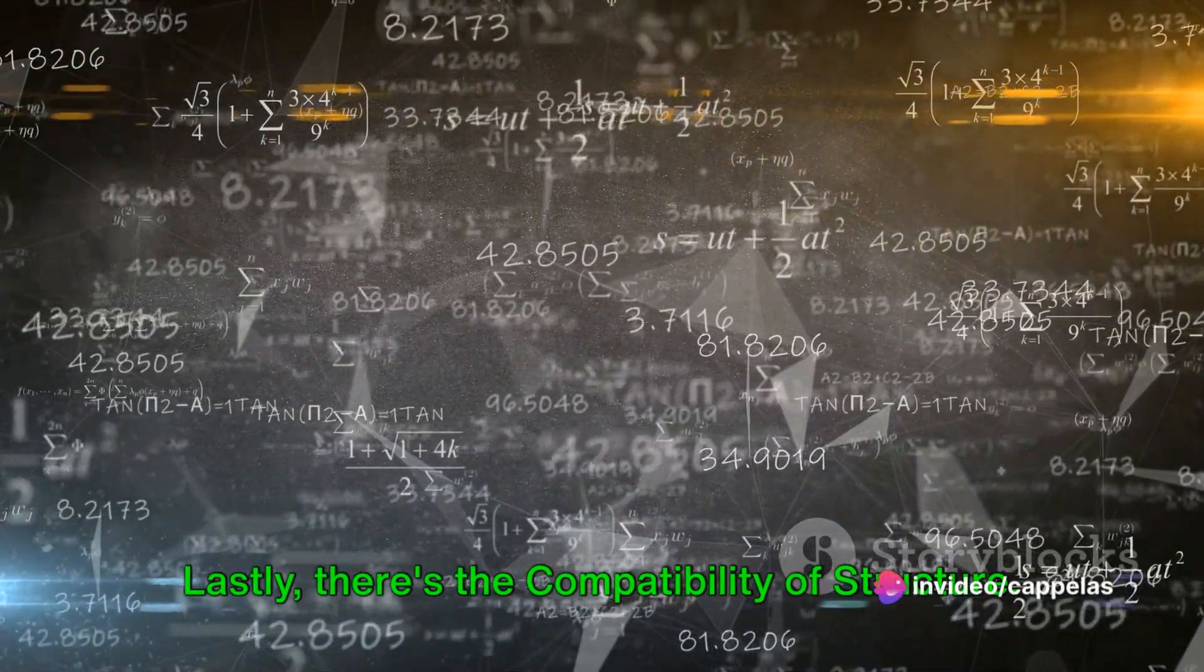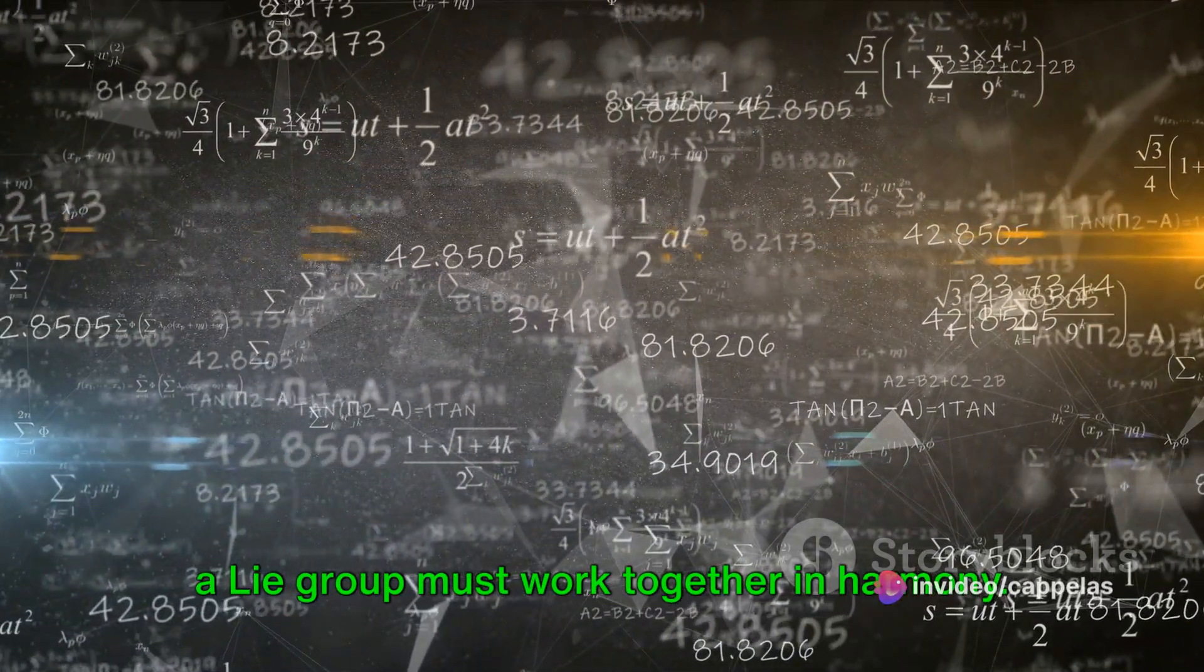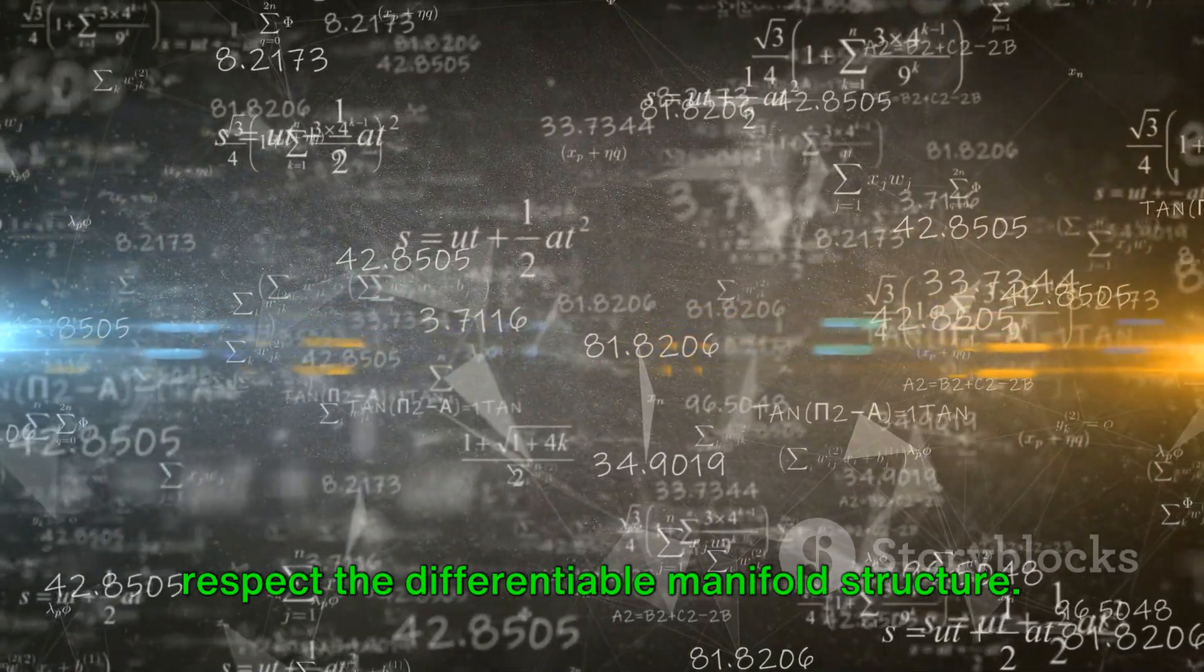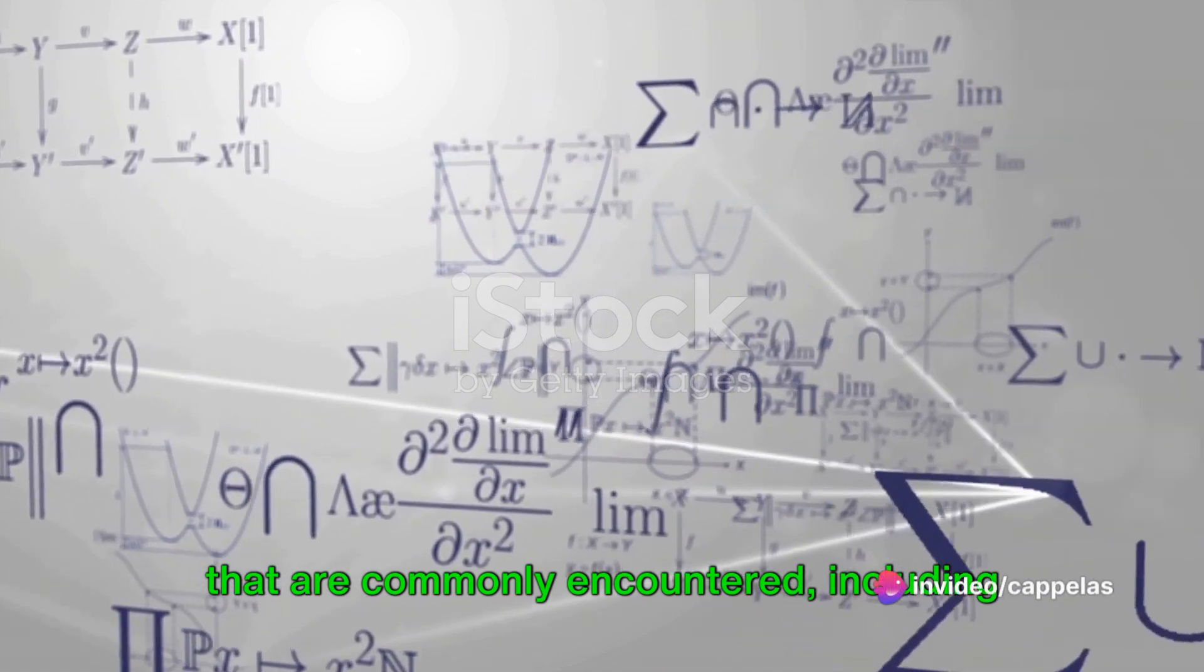Lastly, there's the compatibility of structure. The algebraic and geometric structures of a Lie group must work together in harmony. In other words, group operations must respect the differentiable manifold structure.